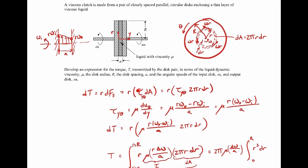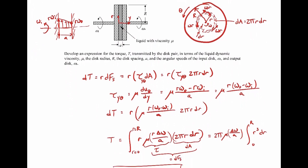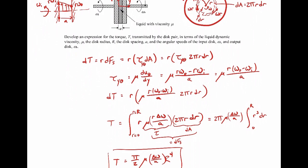The little bit of shear force will be the shear stress times the area. The area is 2 pi r dr, the area of that little annulus. The shear stress, assuming Newtonian fluid, is mu times du dy. The change in velocity is r delta omega, the change in y is a, the separation distance. Plug that all back in and then integrate as we go from the center of the disk out to the edge.